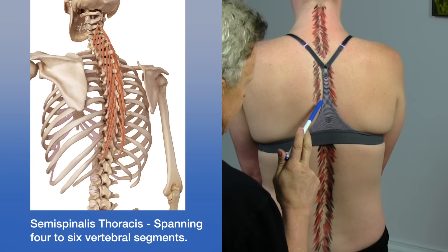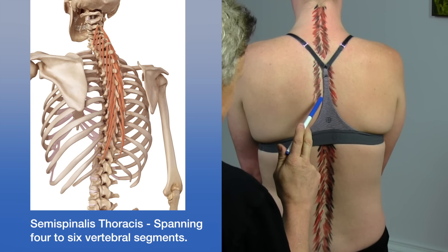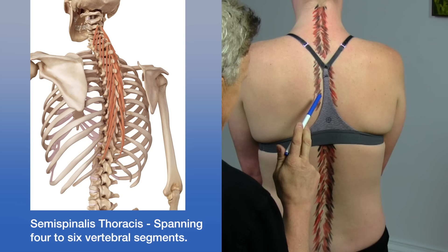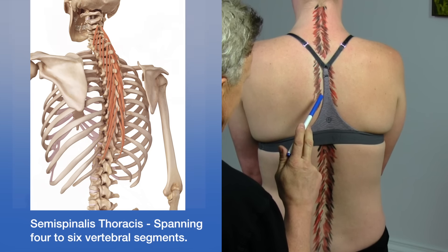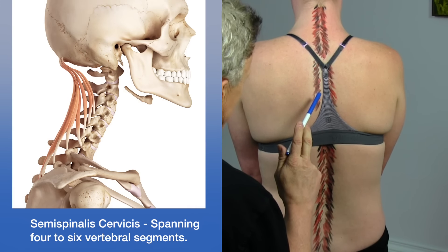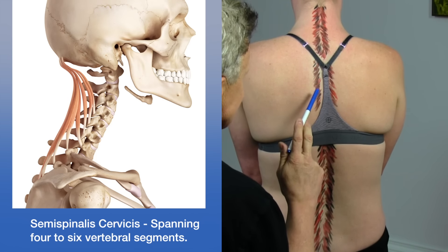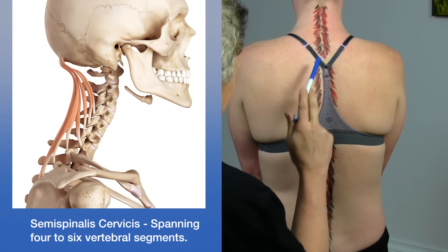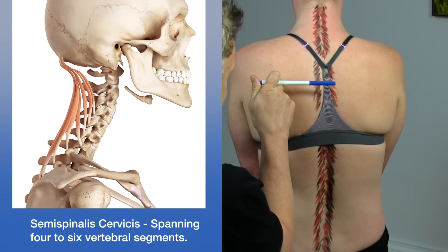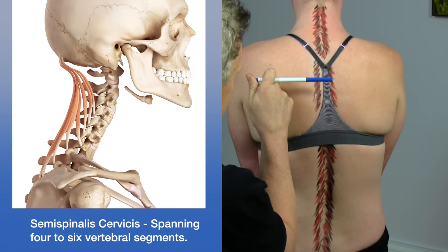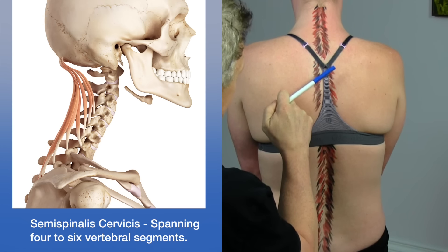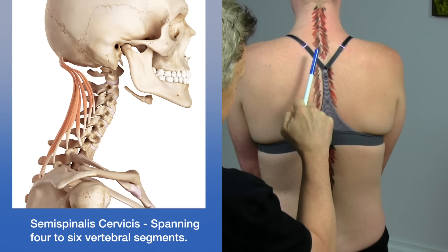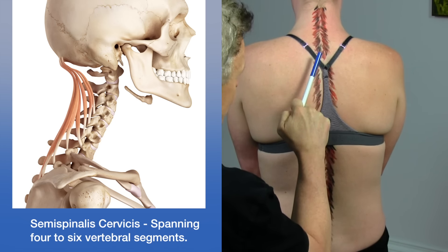The transversospinalis muscles attach to the back of the vertebrae along the spine, from the sacrum right up to the axis — the second vertebra at the top of the spine. They consist of three bundles which arise from the transverse processes along the edge of the spine.